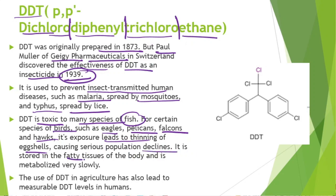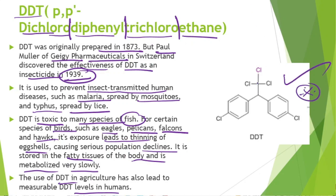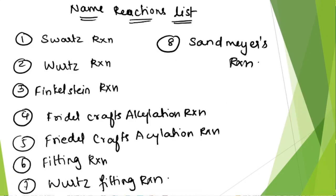DDT is stored in the fatty tissues of the body and is metabolized very slowly, making it very toxic. Use of DDT in agriculture led to measurable DDT levels in humans, as people eat the treated food. This is the structural formula for DDT.